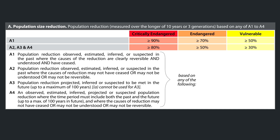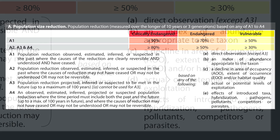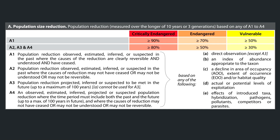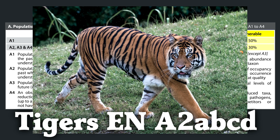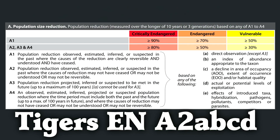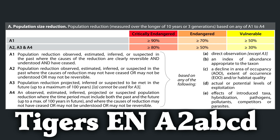Any of the A criteria can be based on direct observation, an index of abundance appropriate to the taxon, a decline in area of occupancy, extent of occurrence and/or habitat quality, actual or potential levels of exploitation, and effects of introduced taxa, hybridization, pathogens, pollutants, competitors, or parasites. An example of a species classified as endangered under Criteria A are tigers, listed under A2. Their population has declined significantly; the reasons like habitat loss or hunting may not have ceased or may not be reversible, and we may not even understand all of the reasons for their decline.